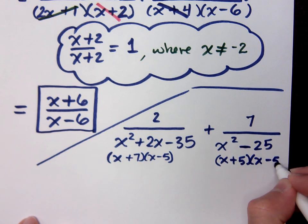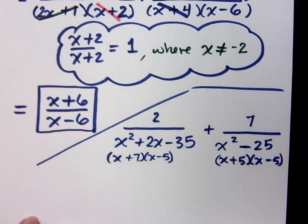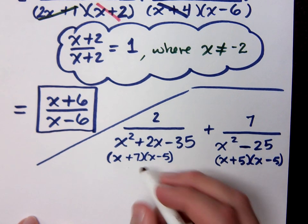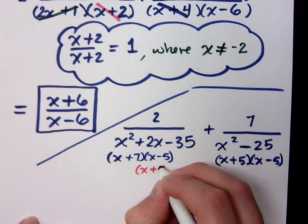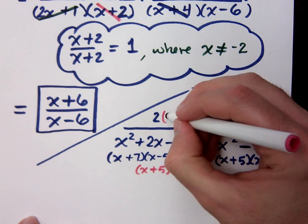You know I love the difference of squares, but now it's a matter of putting in what was missing. What factor was missing on the left part? x plus 5. He's missing the factor of x plus 5, so we'll put that in the numerator and denominator.